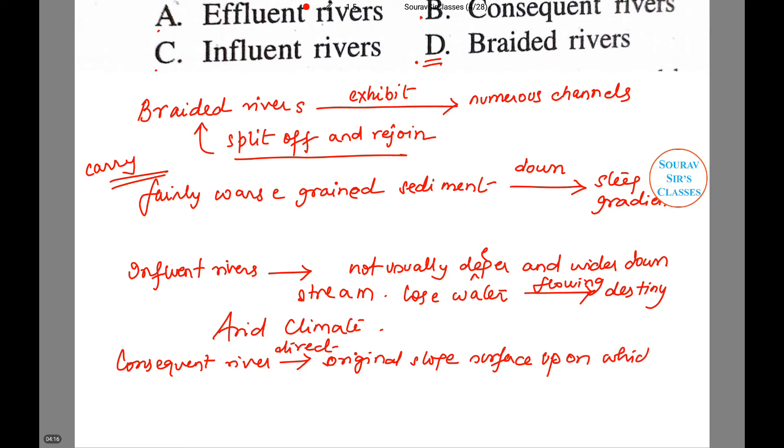This means that it is a river that flows over the slope of land on which it originally formed. This is the main feature of consequent rivers.